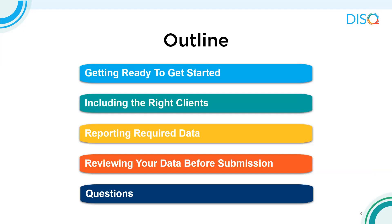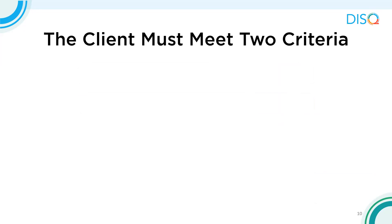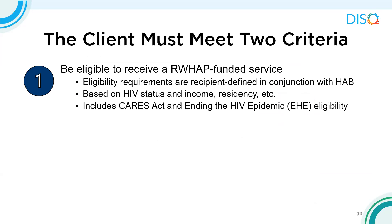Now I'm going to walk through some of the key steps to RSR reporting. First, let's look at how to include the right clients. Your program may serve a lot of people — maybe you're a large federally qualified health center, FQHC, or a health department serving clients with different funding streams. To be included in the RSR, a client must meet two criteria. First, the client must meet the recipient's Ryan White HIV AIDS Program eligibility requirements, which are decided between your recipient and HAB based on HIV status and other criteria such as income and residency.